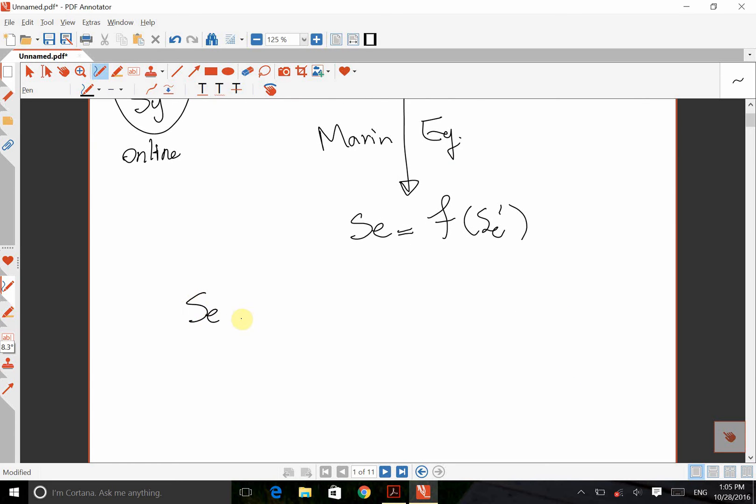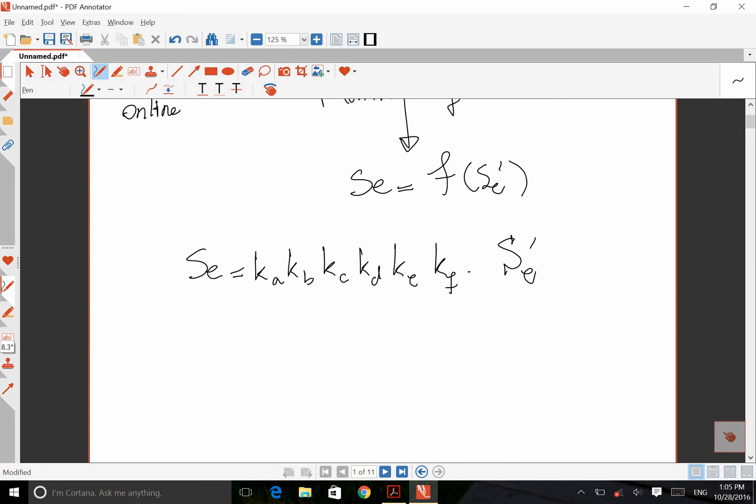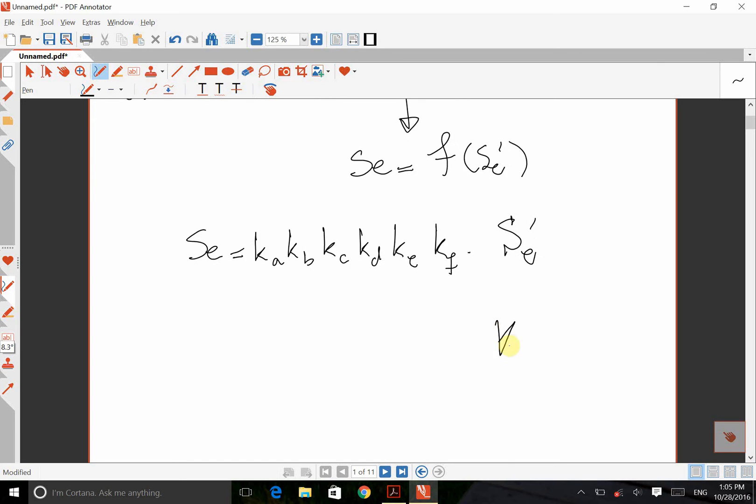And this equation has a couple of factors like KA, KB, KC, KD, KE, KF times Se prime. There is one thing here that I want to mention before I continue. All these K's are lowercase K's. So capital, for example, capital KF is different from lowercase K times F. This is a miscellaneous factor, Marin factor, but this is a stress concentration, fatigue stress concentration. So don't confuse them. It's so confusing in this chapter.